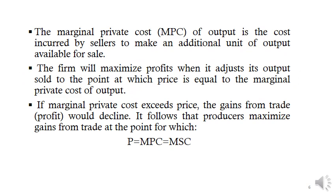Producers maximize their gains when they maximize profits — the firm will increase profits whenever the revenue from selling an additional unit exceeds the cost of producing and selling that extra unit. The marginal private cost is the cost incurred by sellers to make an additional unit of output available. The firm maximizes profits when price equals marginal private cost. If marginal private cost exceeds price, gains from trade decline. Therefore: price = marginal private cost = marginal social cost.